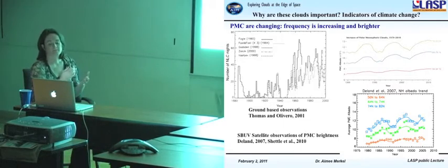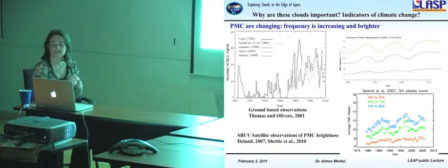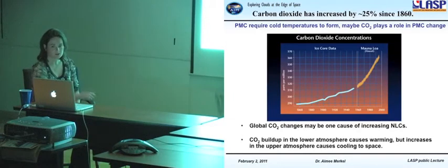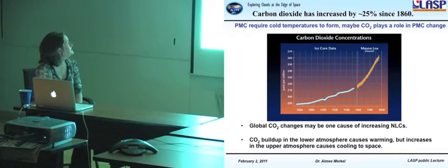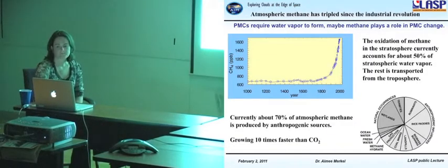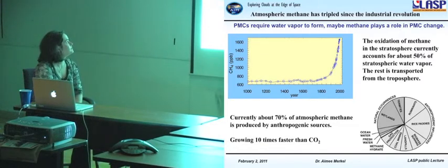So like I said before, PMCs need two things. They need very cool temperatures and water vapor. So what could be causing the clouds to be increasing? Well, the hypothesis is that methane and CO2 are providing these things. And if those two are changing, we're going to see more and more clouds. Okay, so one of the biggest questions still are, are these clouds indicators of climate change?